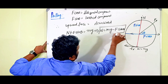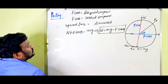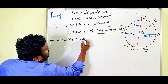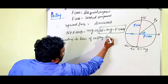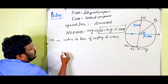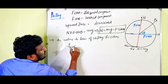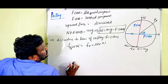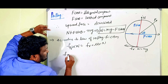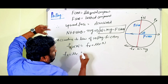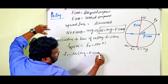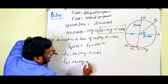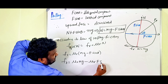According to the law of rolling friction, F_R is proportional to N, so F_R equals mu_R times N. Substituting the value of N, we get: F_R equals mu_R times (Mg minus F sin theta), which gives F_R equals mu_R·Mg minus mu_R·F sin theta. This is equation number 1 — the frictional force on the roller when pulling.